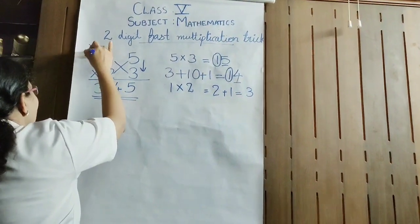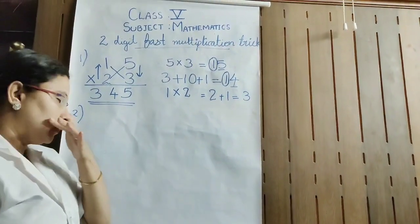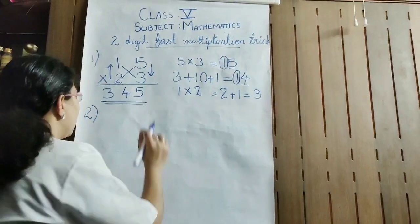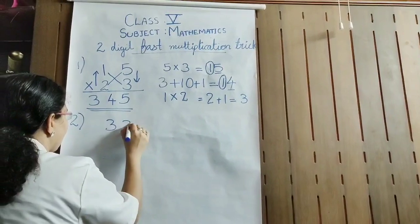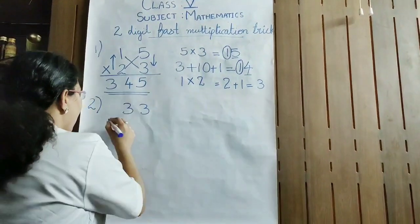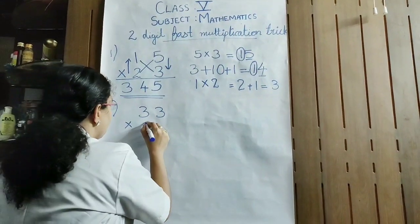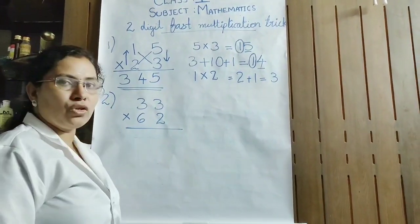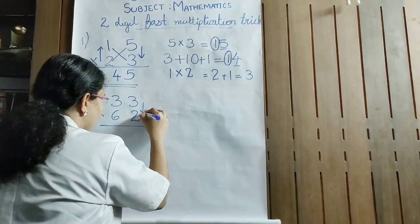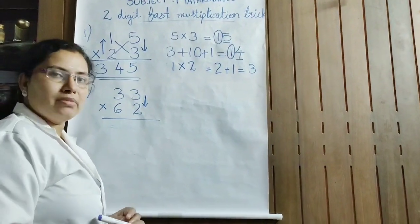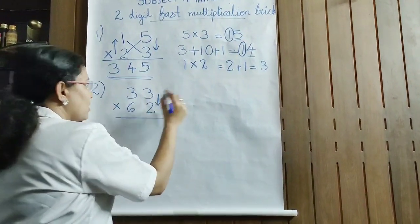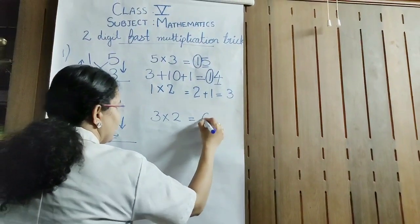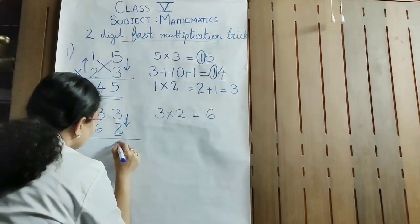Let us see one more question. I will be writing another question — with this you will be more clear. Let us take another number: 33. I am going to multiply 33 with 62. As we have said, first we have to multiply the unit place numbers. 3 and 2 are in the unit place, so you will be multiplying 3 into 2. You will be getting 6 — there is no carry, only one digit. So you will be writing 6 here.